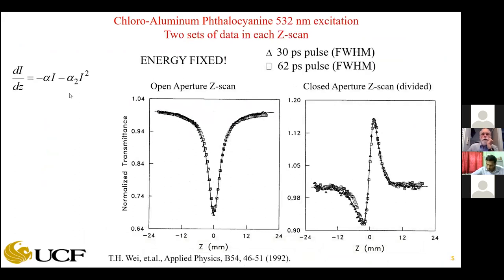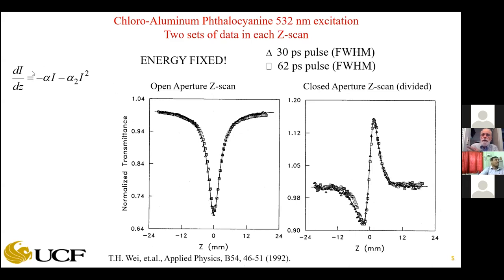Here's an example where you can easily misinterpret an experiment. Here are two sets of data on chloroaluminum phthalocyanine — the sort of pigment used in blue paint for cars. There are two open-aperture and two closed-aperture z-scans. The energy is fixed from the laser, but by putting an etalon in the cavity, we can change the pulse width by a factor of two. We put both z-scan datasets on the same plot. Notice the squares and triangles — the two sets — fall on top of each other even though the irradiance changed by a factor of two. So this cannot be two-photon absorption.